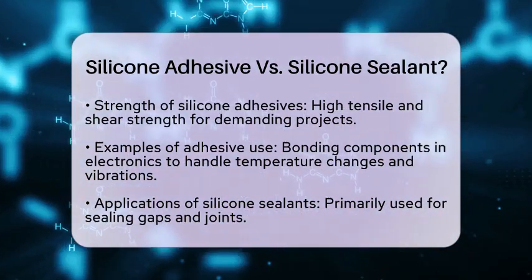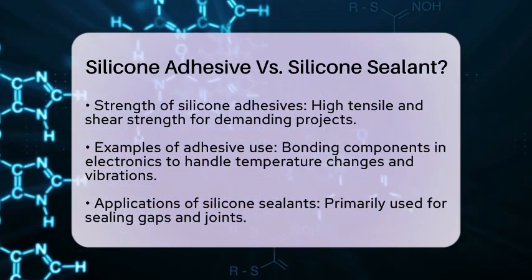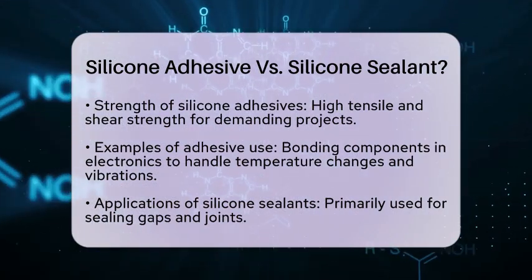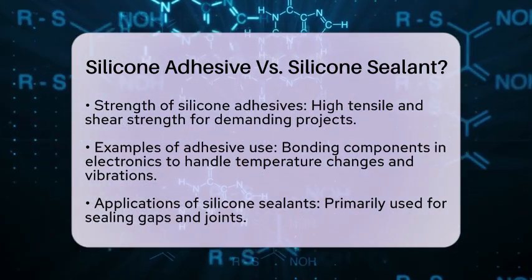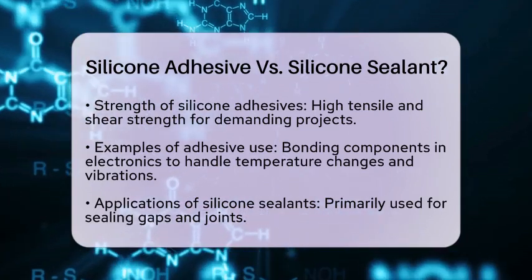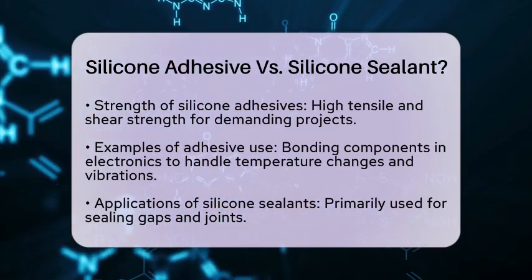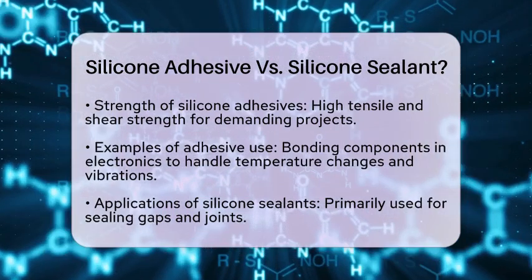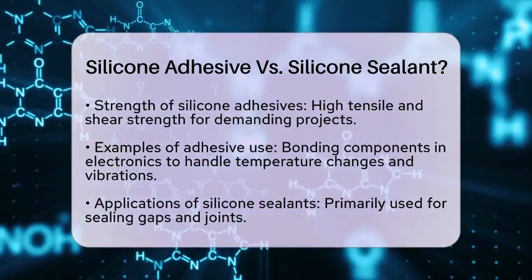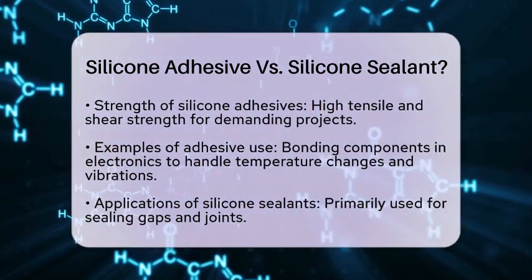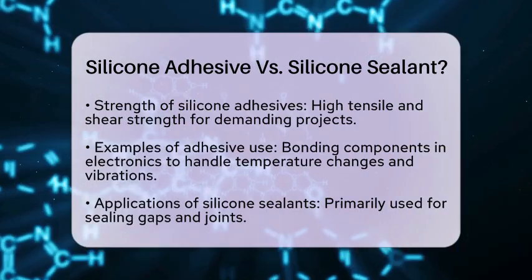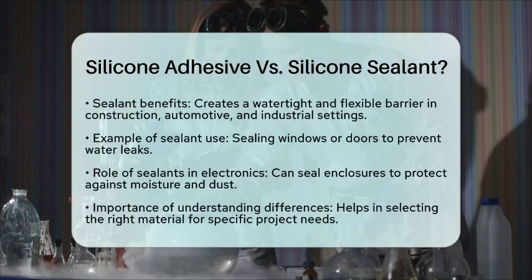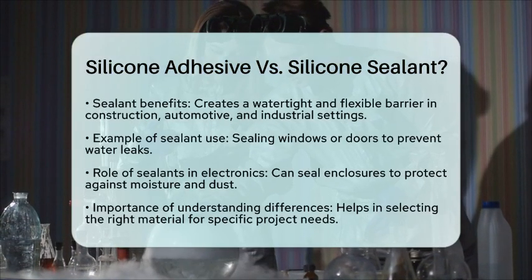Silicone sealants, however, are mainly used for sealing gaps and joints. They create a watertight and flexible barrier, which is essential in construction, automotive and industrial applications. For example, you might find silicone sealants used to seal windows or doors, preventing water leaks.